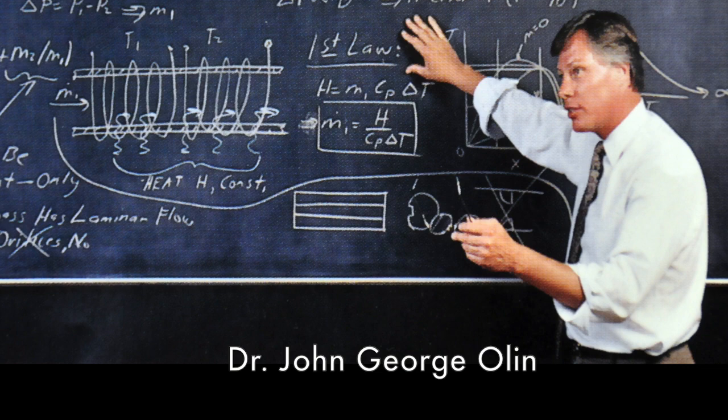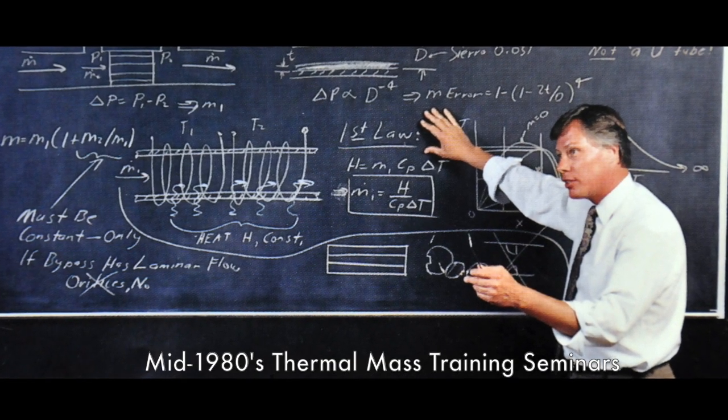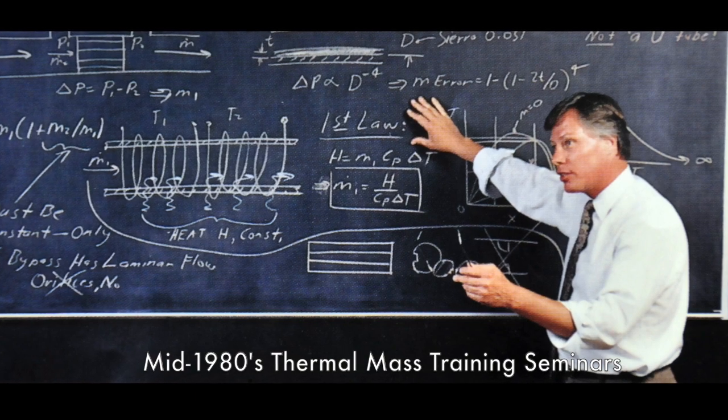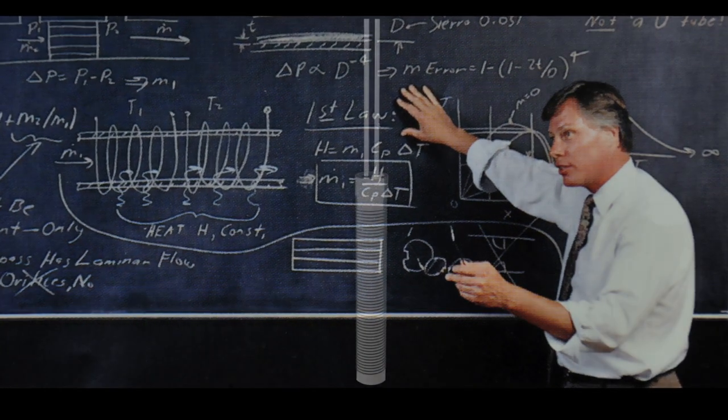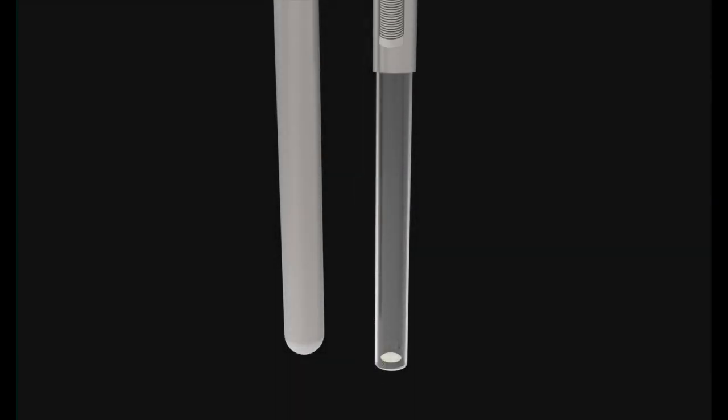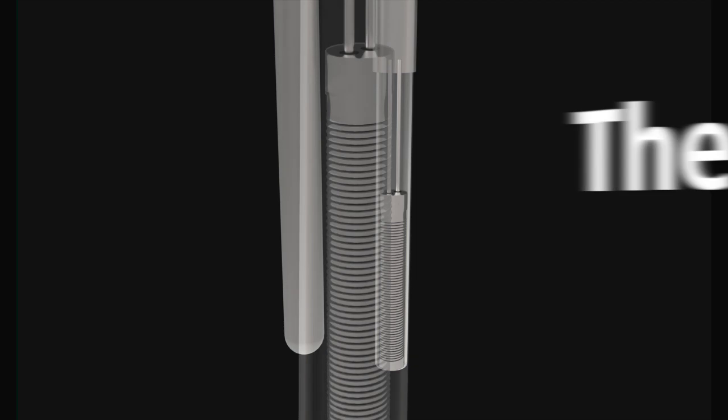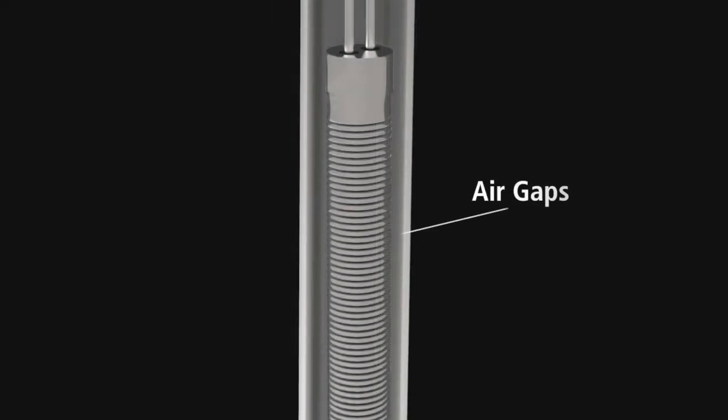To make a thermal flow sensor truly industrial strength, Dr. Olin pioneered the innovation of an all-metal clad thermal sensor in the early 1980s, winding platinum wire around a ceramic mandrel and placing it inside a metal sheath called a thermal well. The problem was that the air gaps between the thermal well and the platinum wound mandrel needed to be filled to assure stable heat transfer. This was the key to assuring an accurate and stable thermal mass flow meter.